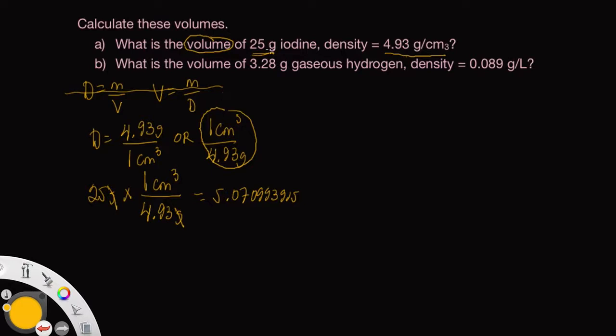how many sig figs do we want to round this off to? We have 2 sig figs in the 25, 3 sig figs in the density. So we want to round this off to 2 sig figs. This number here is greater than 5, so we round this up to 5.1.